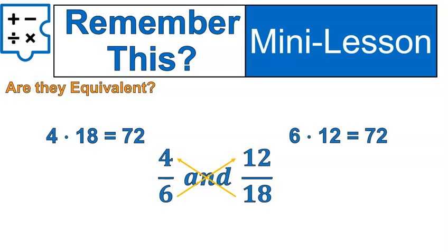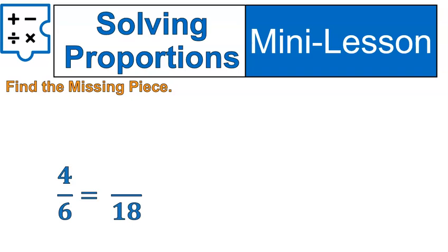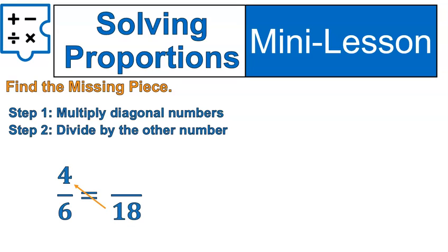What we're going to do today is take that cross-multiplying to the next level by solving when there's a missing piece inside a proportion or a set of equivalent ratios. Here are the steps. Number one, cross-multiply, or multiply the numbers that are diagonal to each other. 6 is diagonal to the blank space, and 4 is diagonal to 18. Then, you divide by the other number that's left, and that will give you your answer.